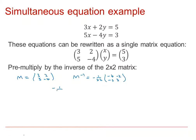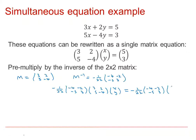So now we pre-multiply both sides by the inverse of M: −1/22 times (−4, −2, −5, 3), multiplied by (3, 2, 5, −4), times XY. And we pre-multiply the right-hand side by −1/22 times (−4, −2, −5, 3) times (5, 3). It's fairly intuitive and accepted that the left-hand side gives the identity matrix, and therefore we're left with XY on this side.